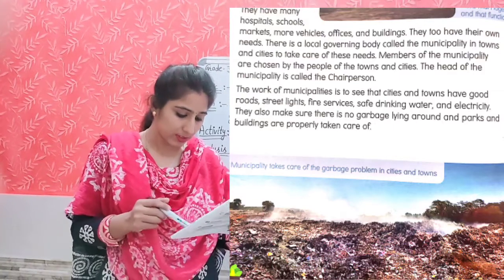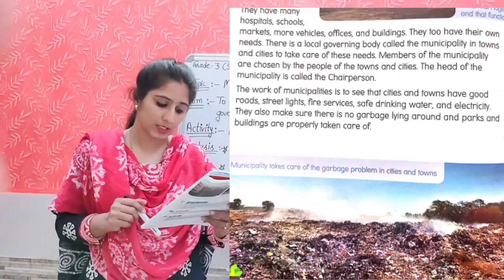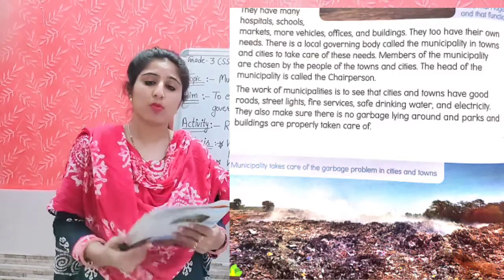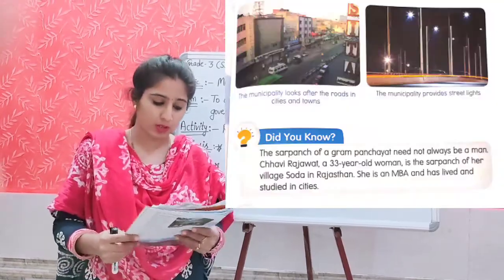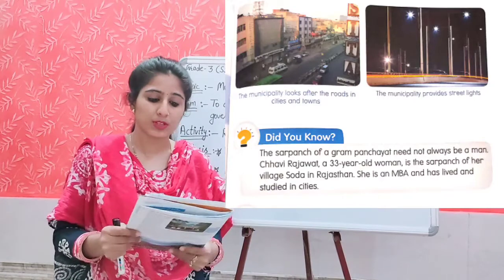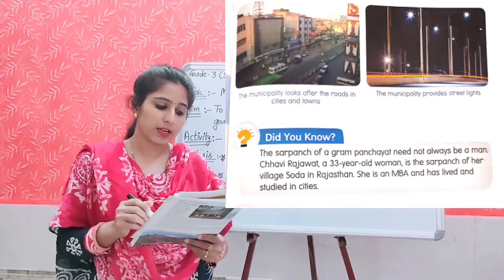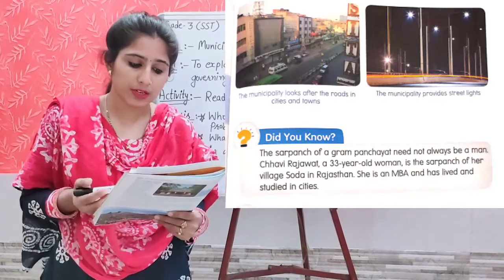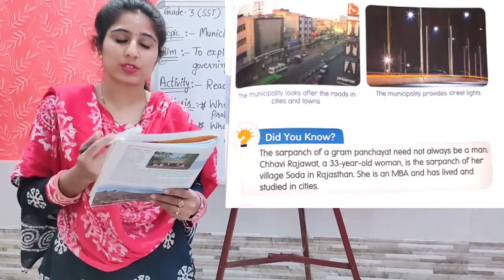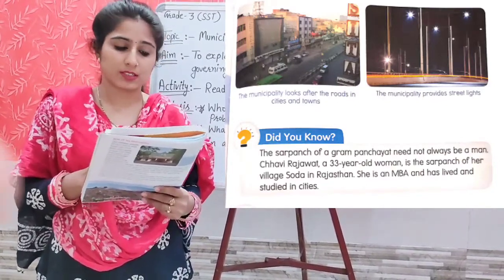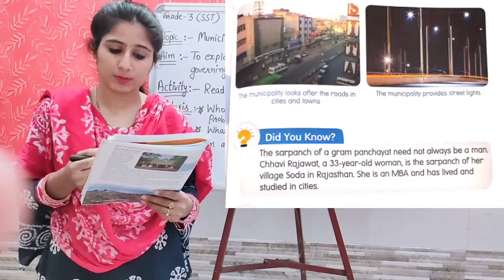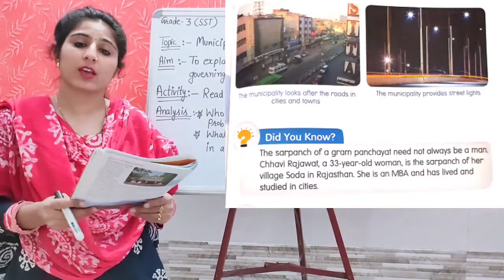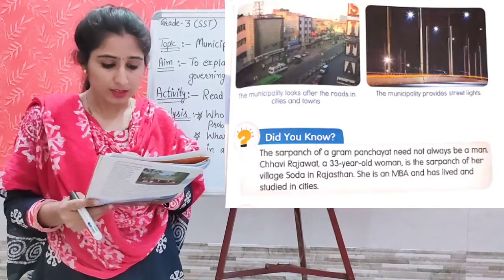Here you can see in this picture, the municipality takes care of the garbage problem in cities and towns. Now go to the next page, page number 41. Here, two pictures are given. The municipality looks after the roads in cities and towns, and it also provides and takes care of streetlights.